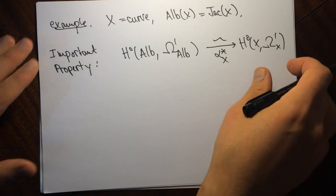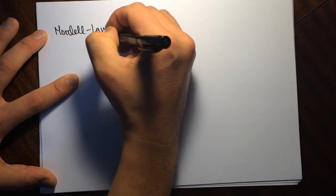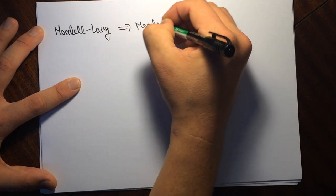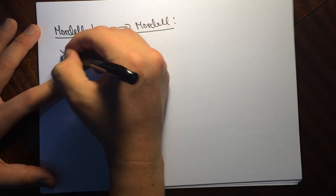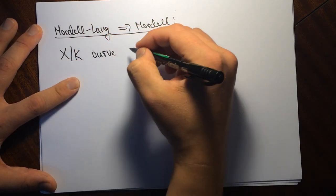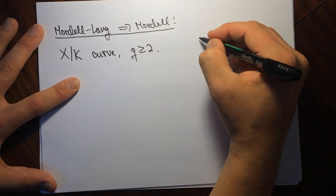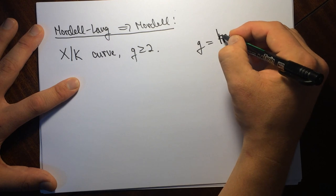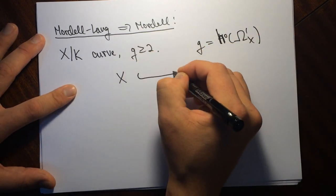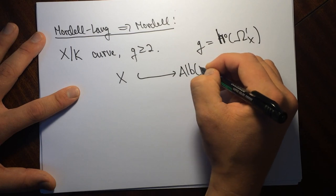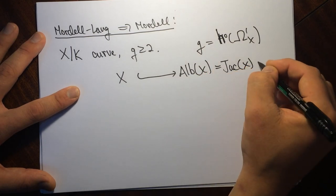Now I want to explain how Mordell-Lang implies Mordell. We take X over k, a curve of genus greater than or equal to 2, where g equals the dimension of H⁰(X, Ω¹_X). Since it's a curve, we have this embedding into the Albanese A(X) — which is the Jacobian of X — and let's just call this A.